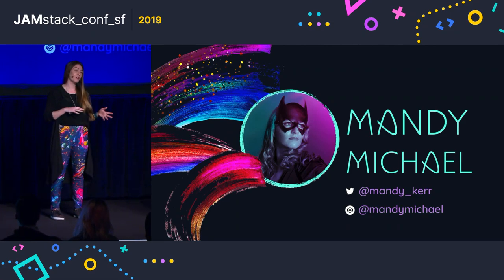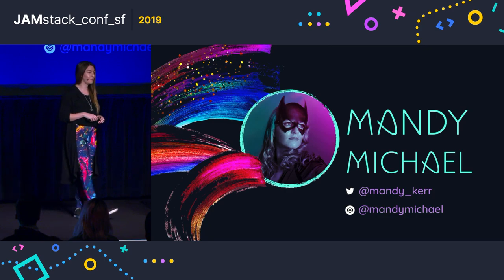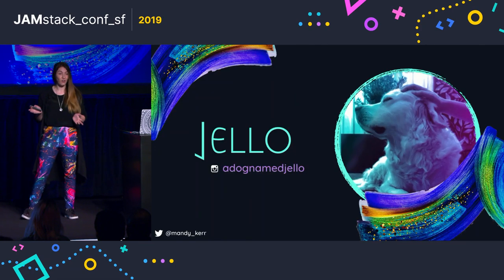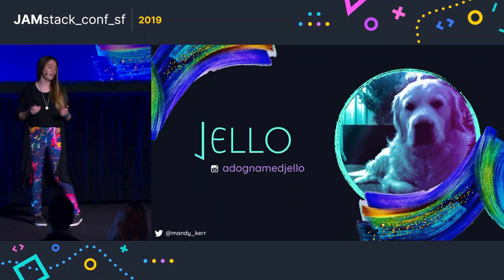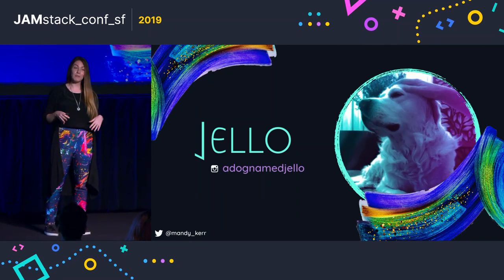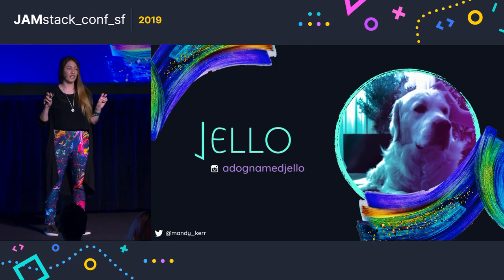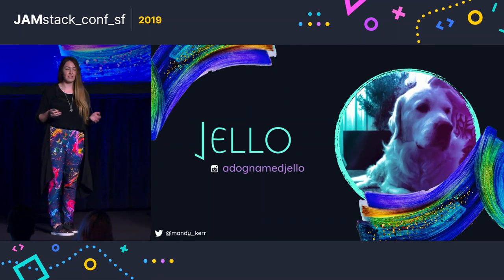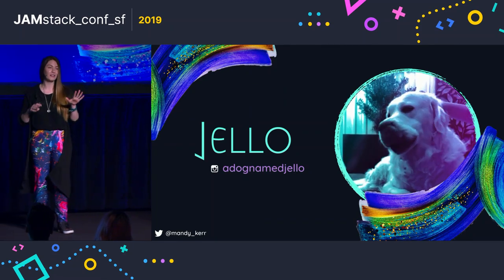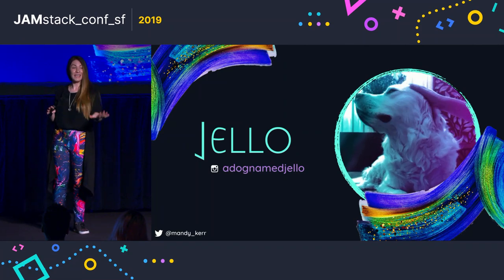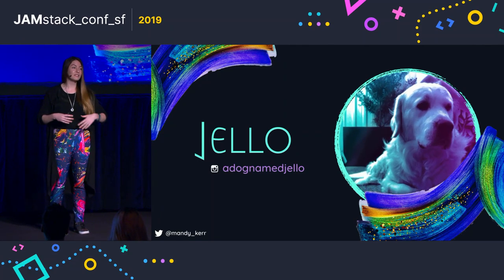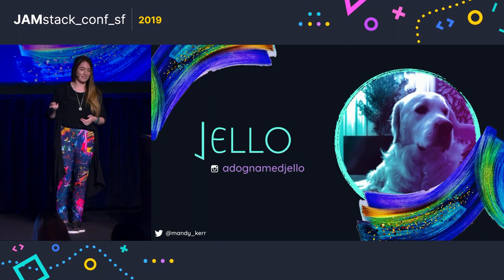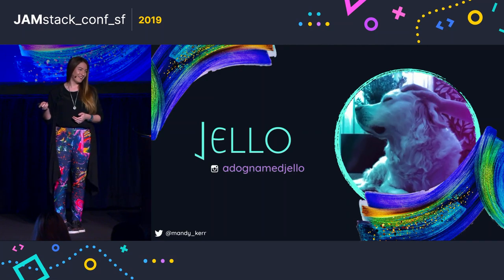All the demos I'm going to show you are up on CodePen, so you can go and check those out later if you want to. More importantly, this is my dog. His name is Jello. In my demos I use what I call Jello Ipsum. Without the context that it's a dog, it can be very confusing for people. So when you see the word Jello, hopefully you'll smile and enjoy the talk even more, because dogs are cute.